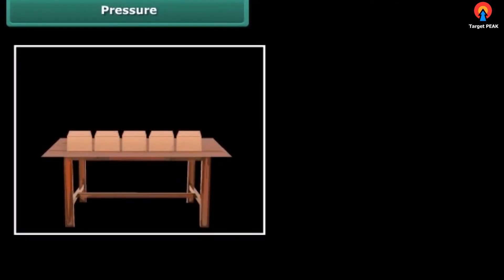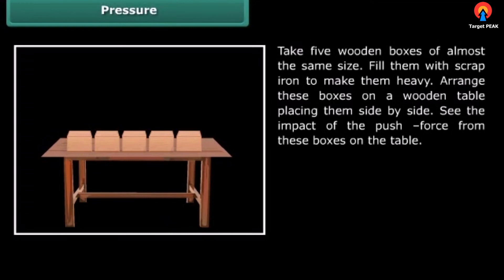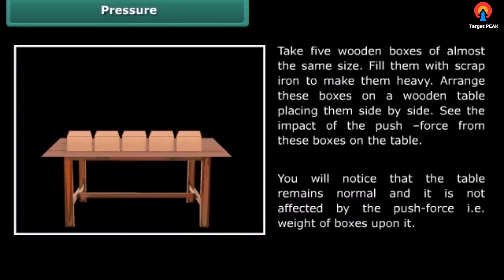Let us perform an activity. Take five wooden boxes of almost the same size, fill them with scrap iron to make them heavy. Arrange these boxes on a wooden table, placing them side by side. See the impact of the push force from these boxes on the table. You will notice that the table remains normal and it is not affected by the push force, that is the weight of boxes upon it.